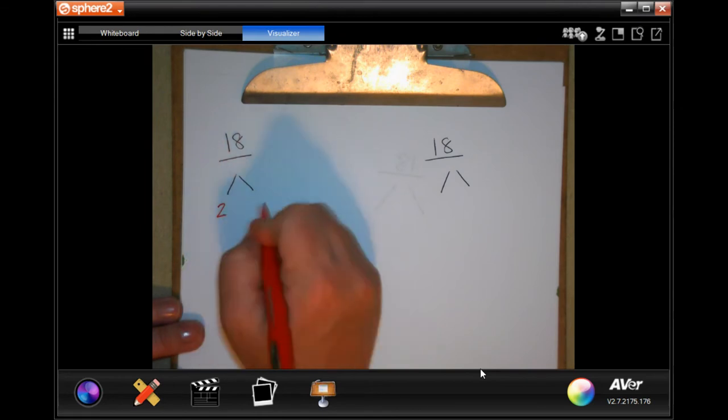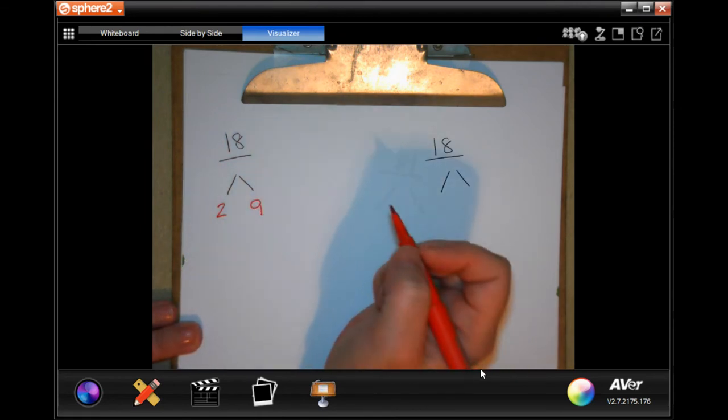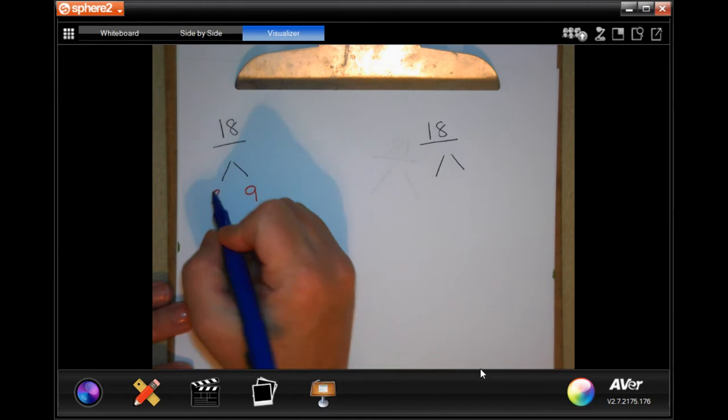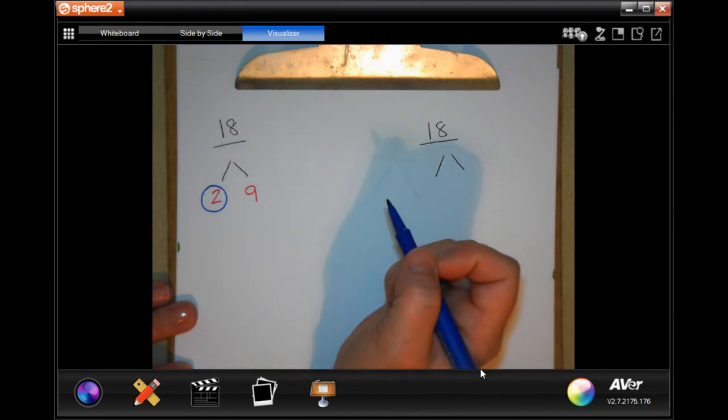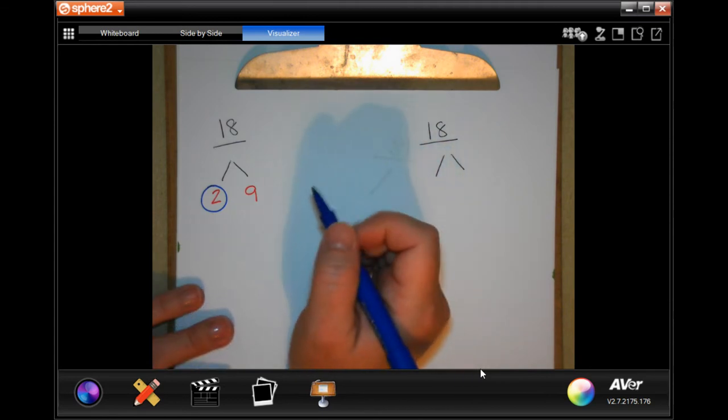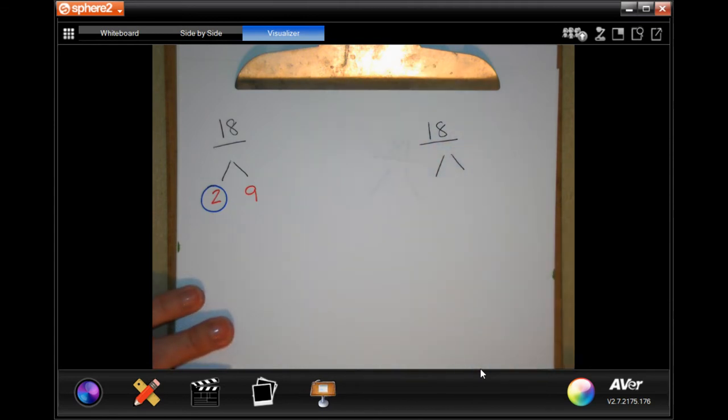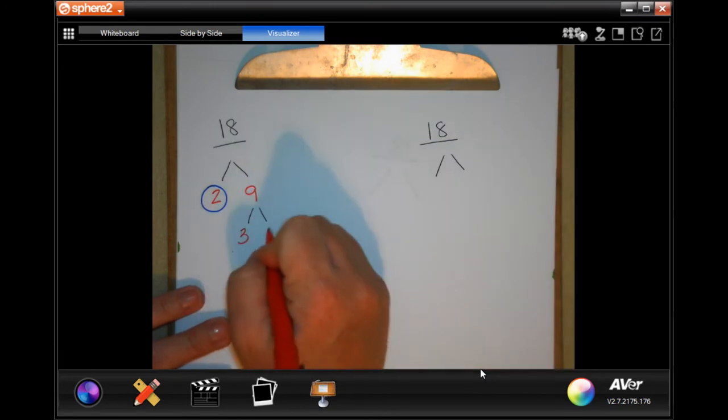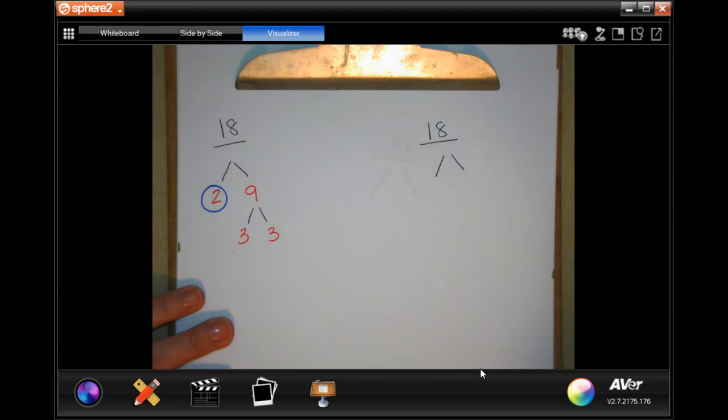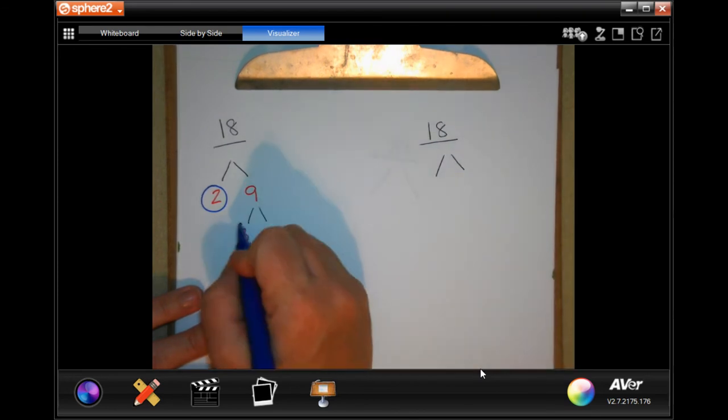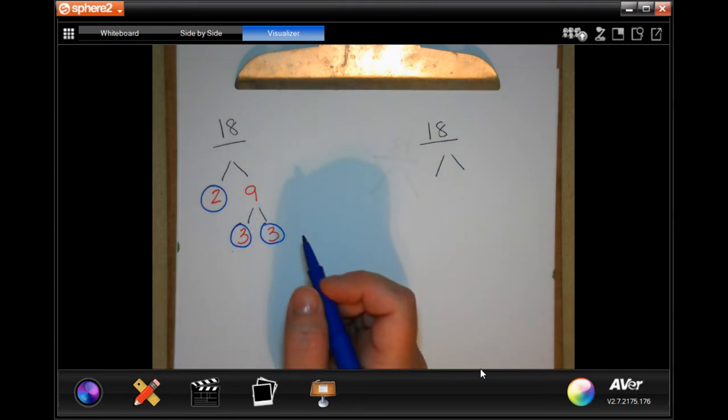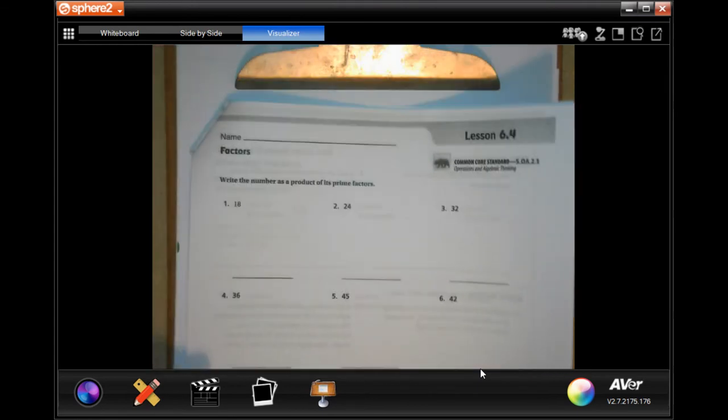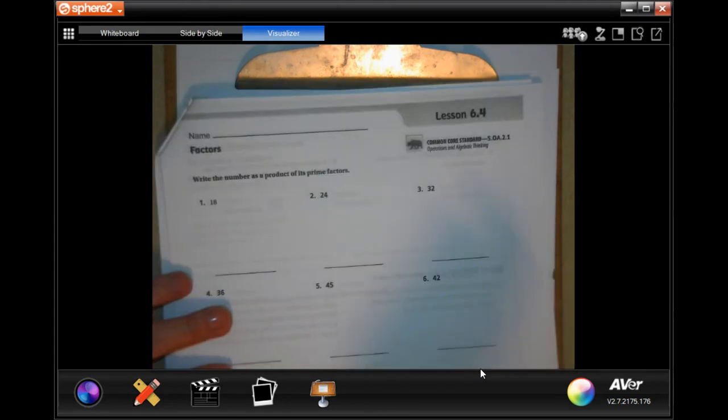So the first one I'm going to do two times nine. Now two is a prime number. I'm going to circle it. If you don't know your prime numbers, you need to get yourself a chart off of Google. Now nine, I can break up to three and three. Three times three is nine. Both of those are prime numbers. So when it says write the number as the product of its prime factors, you're going to write two times three times three.